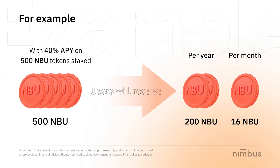For example, with 40% APY on 500 NBU tokens staked, users will receive 200 NBUs per year, or 16 NBUs per month. Admittedly, not all staking opportunities give such high returns on users' deposits, like on the Nimbus platform.